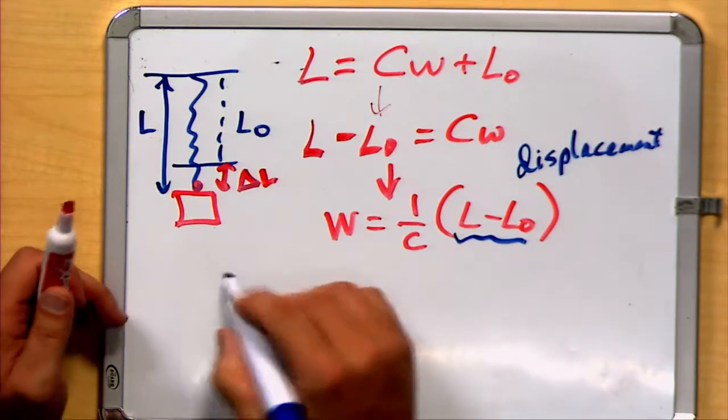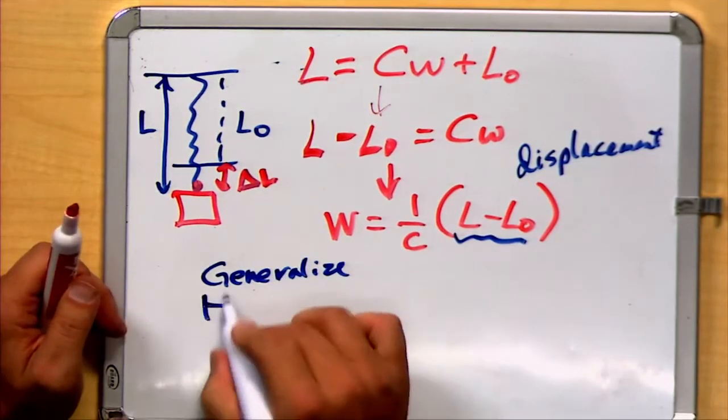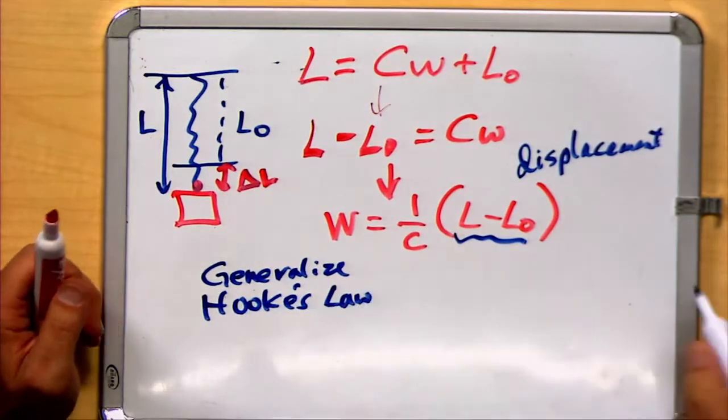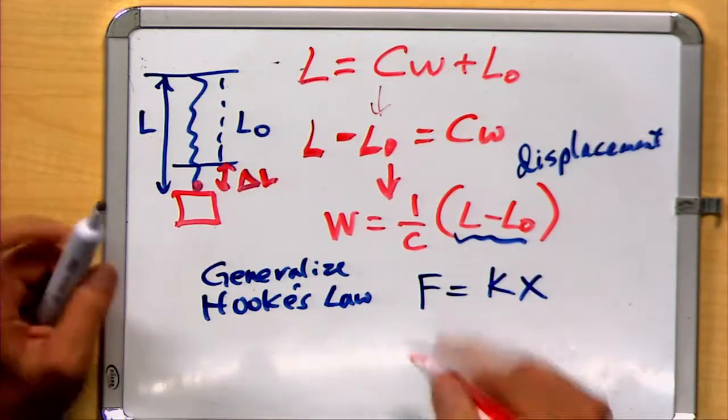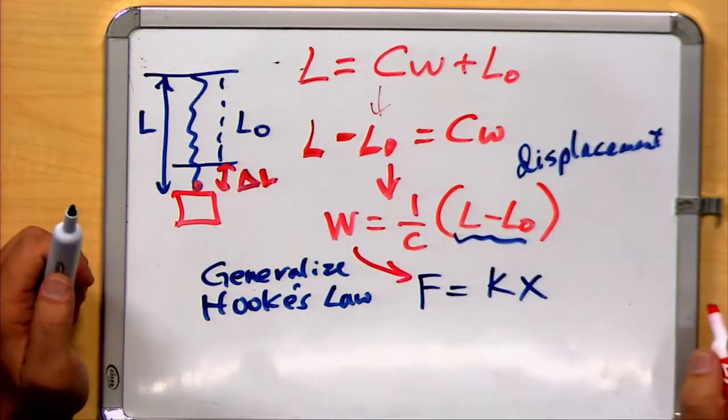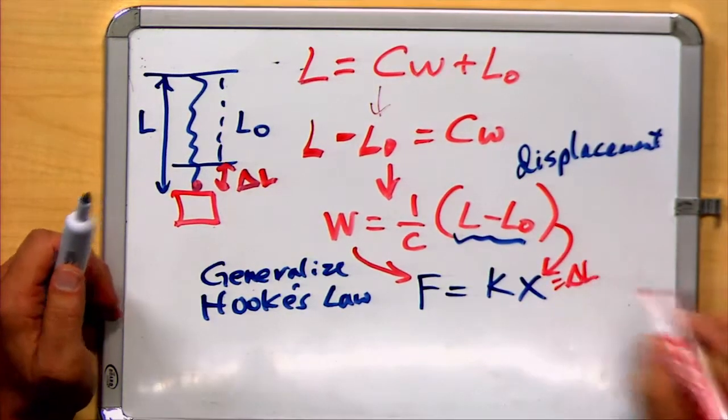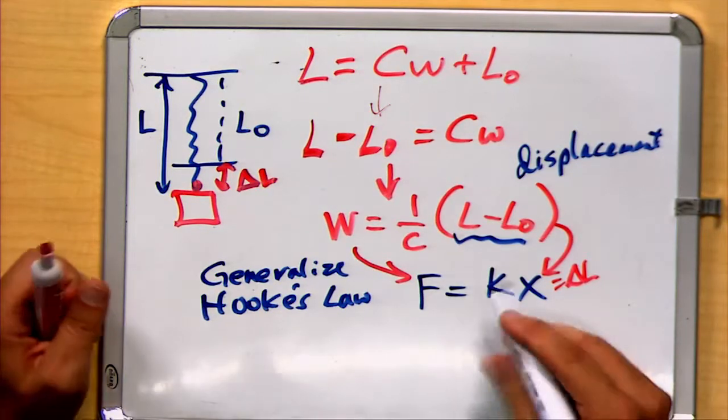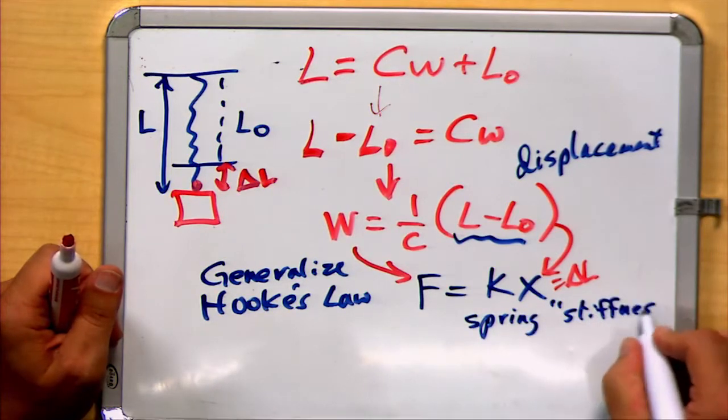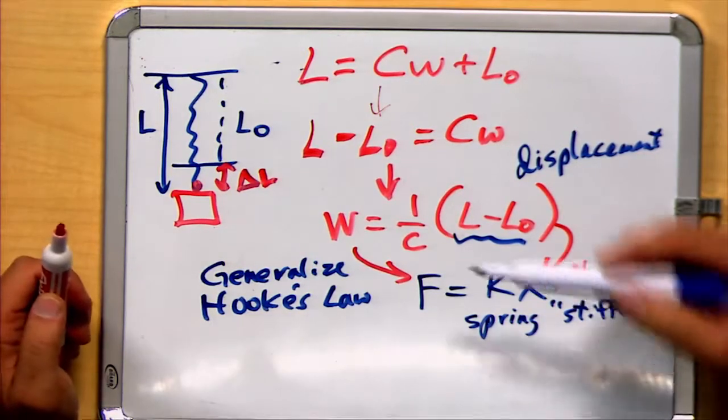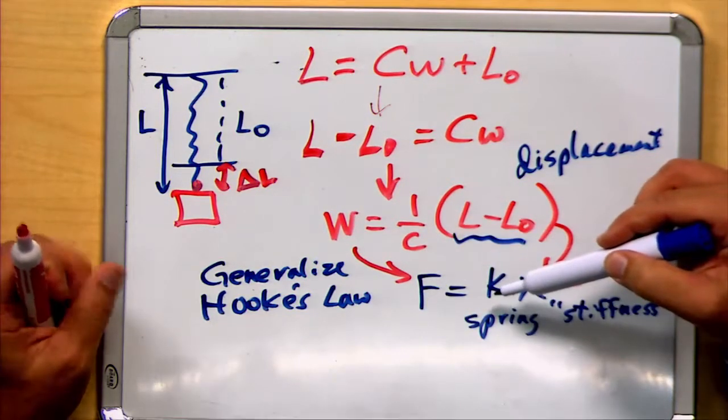Notice we can generalize this equation to something studied in a physics class known as Hooke's Law, which says F equals KX, where F is the force, our weight being a certain type of force, the one pushing down. Our X being this displacement we're talking about, being the same as the delta L, the change in the length. And then finally, this K being a constant, this is called the spring stiffness. Notice, because our original value here, C, was a constant, 1 over C is just another constant that we'll go ahead and call K.